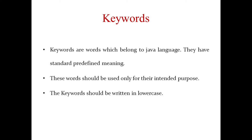The first token type is keywords. Keywords are an essential part of a language definition; they implement specific features of the language. Java has reserved 50 words as keywords, and these keywords are combined with operators and separators according to a syntax that forms the definition of the Java language.